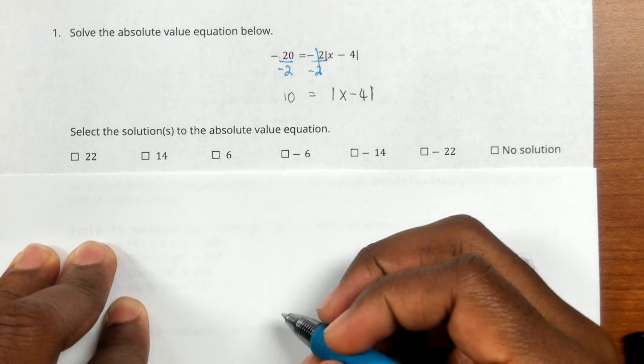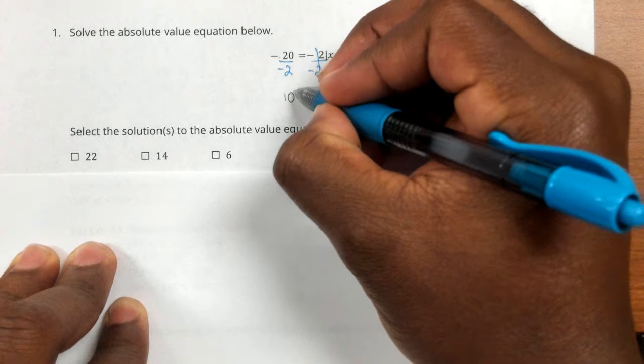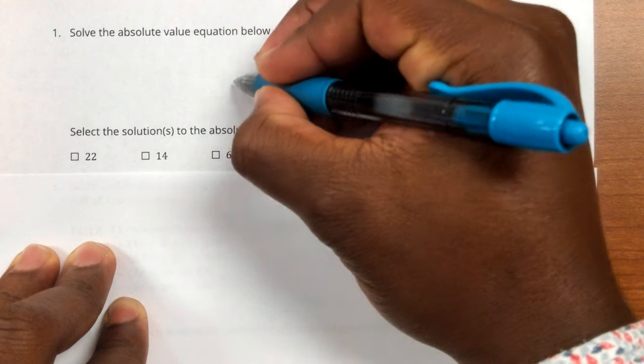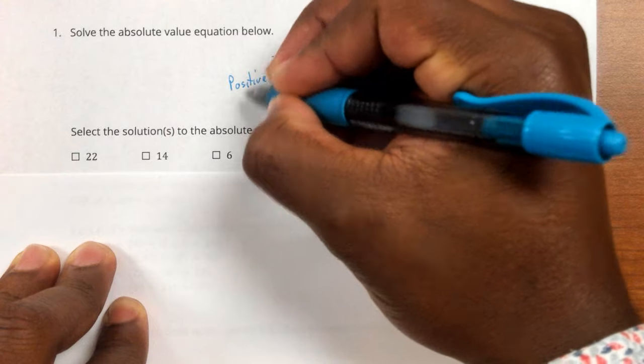So now we're going to apply the absolute value. The absolute value means that this number could be either a positive or a negative.